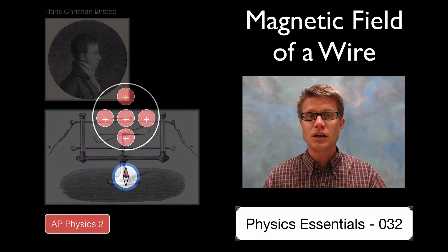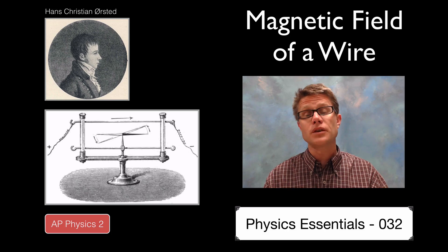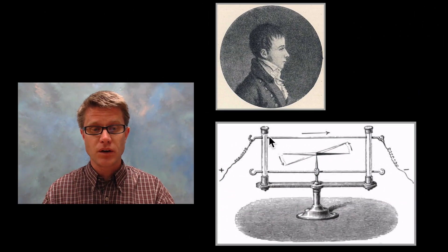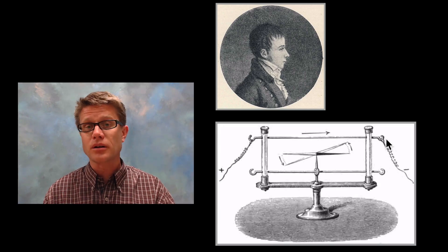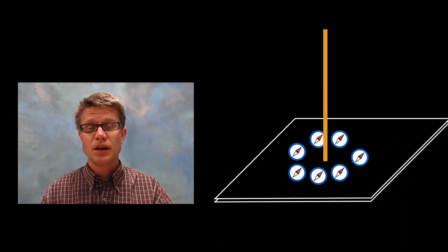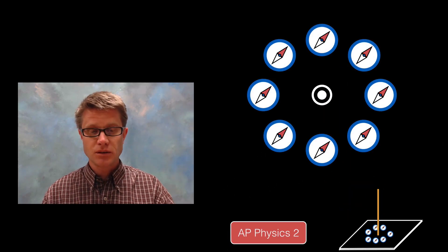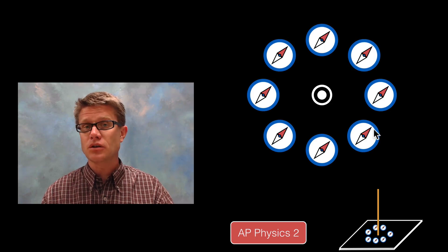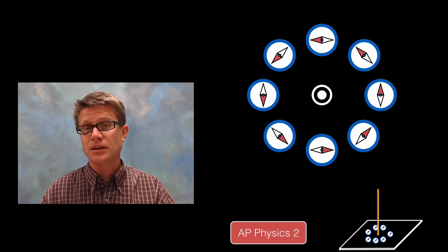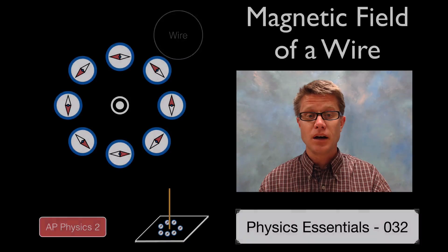Then a brilliant Danish scientist named Hans Christian Ørsted moved the charge. He had a current — we know now it's electrons moving, but the conventional current goes in one direction. What he found is that as current moved through the wire it actually deflected a compass. So that charged particle has to be moving. We can demo this in a science lab: imagine a wire coming out of a table with a bunch of compasses around it. When we turn on the current, you can see we're creating a magnetic field around the wire.